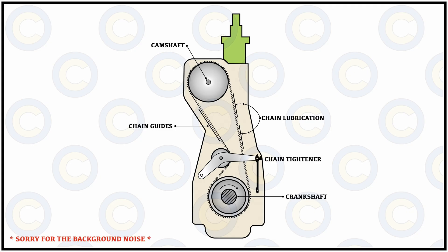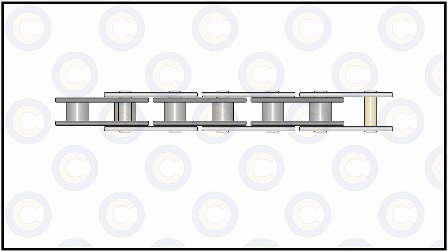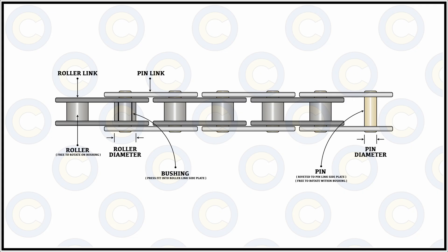Now that we understand the chain drive's major components and their roles, we move on to the chain itself and how it functions. The chain has major elements known as the roller link, the pin link, the roller, the pin, and the bushing. The material used in construction of the chain is nickel chromium molybdenum steel for the roller links, and chromium molybdenum steel is used for the bushing.